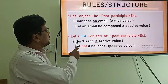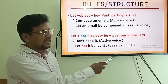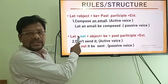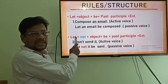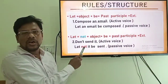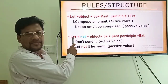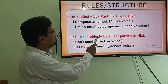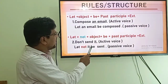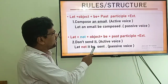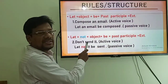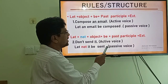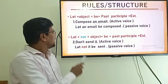Number two: 'Don't send it' — this is active voice. Here 'not' is present, so the rule is: Let + not + object + be + past participle + extension (if any). Passive: Let + not + object 'it' + be + past participle 'sent'. There is no extension in this sentence.